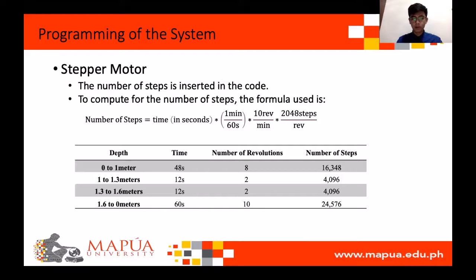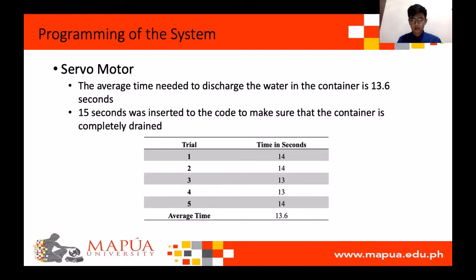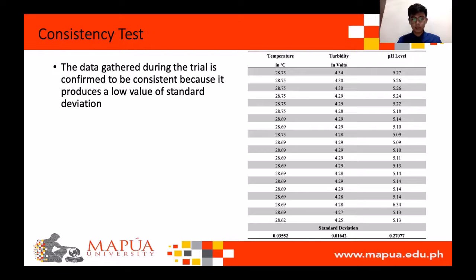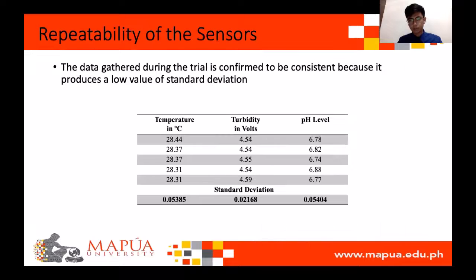For the stepper motor, the gathered time is converted to number of steps using the formula, and the number of steps is inserted in the code. For the servo motor, the average discharge time gathered is 13.6 seconds, and 15 seconds is inserted in the code to allow a little margin. The consistency test data shows a low value of standard deviation, which proves sensor readings are consistent. The repeatability test results also show a low standard deviation, proving sensor readings are consistent.